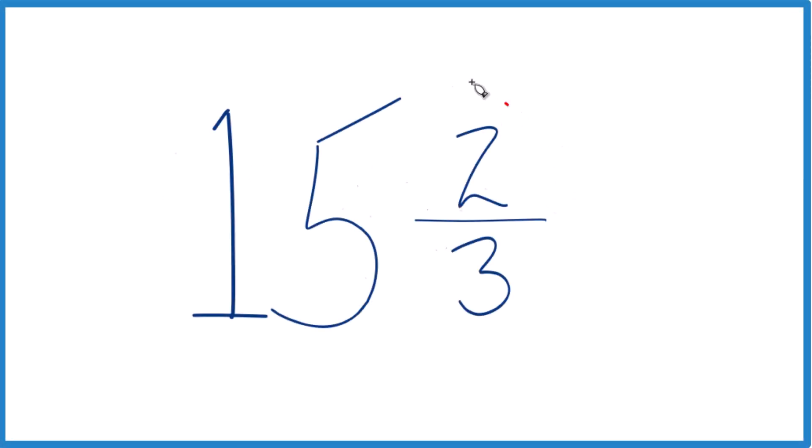If you're given the mixed number 15 and two-thirds, you need to get that to an improper fraction. Here's how you do it.